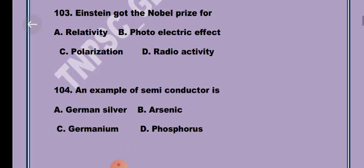Next question, Question 4. An example of semiconductor is Option C, Germanium.